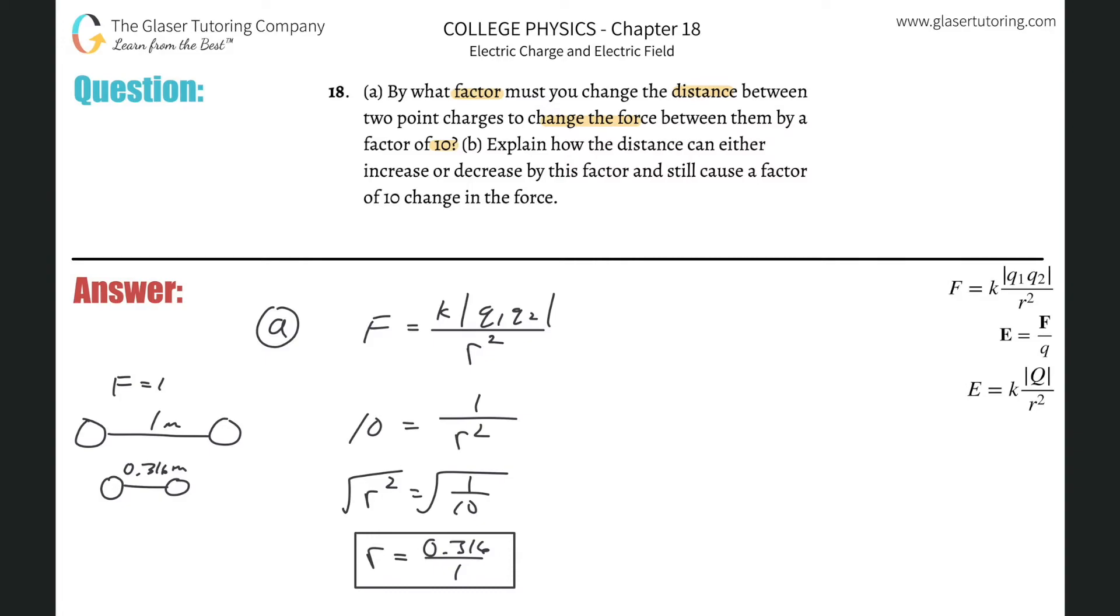If we reduce the distance between them, the force value should increase to be 10. The charges stay the same, so if you were to plug this in for the distance—0.316 and then square it, what do you get? Basically 0.1, right?